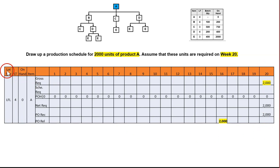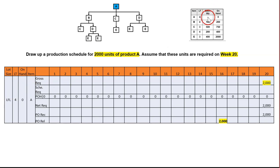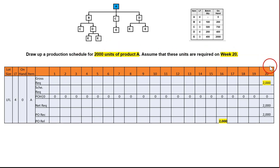I will use the same table. For item A, the lot size is lot-for-lot. Lead time is four and on-hand is zero. I know it's lot-for-lot because the batch quantity is not mentioned. Again we have gross requirement, scheduled receipt, on-hand, net requirement, purchase order receive, and purchase order release.